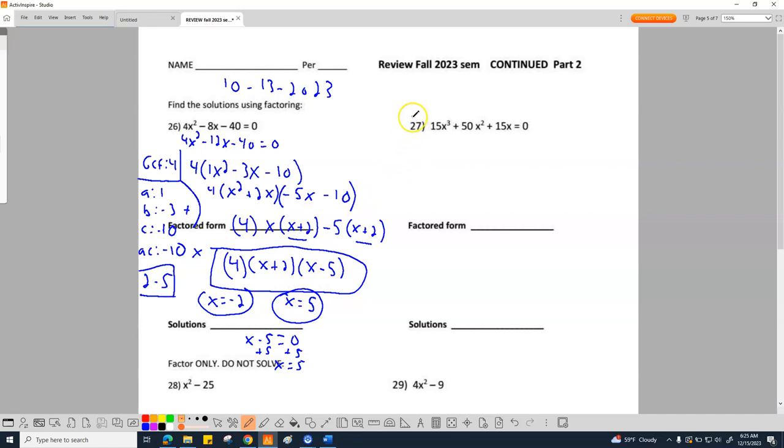I am not going to work 27 for you. You've got to do that yourself. But what I will tell you is that the GCF before you start is 5x, and you've got to take that out. And at the very end, when you're done, you will have a 5x here, this here, and this here, which means you will have 3 solutions by the time you're done with this one here.